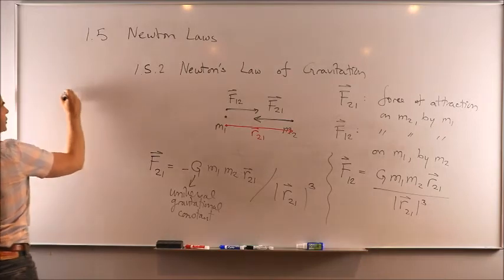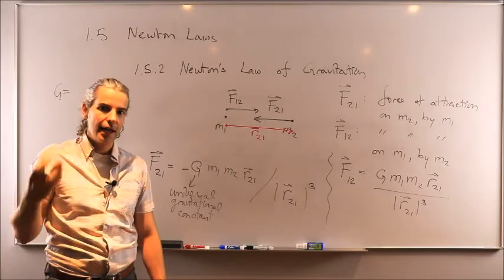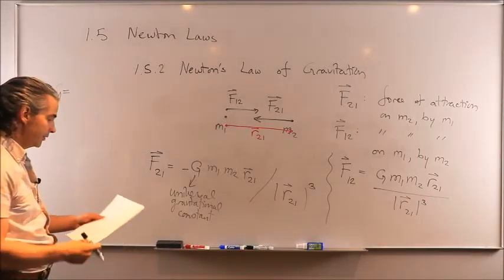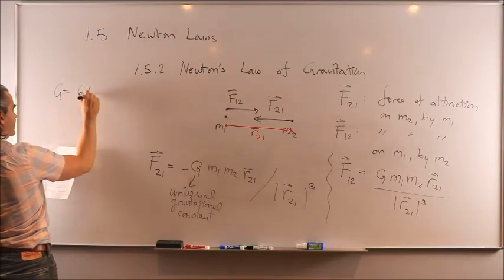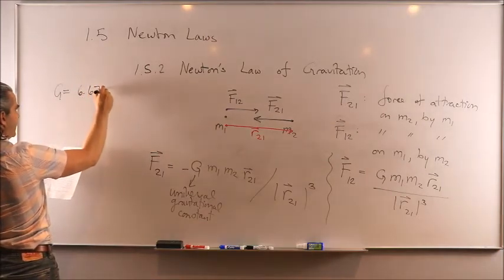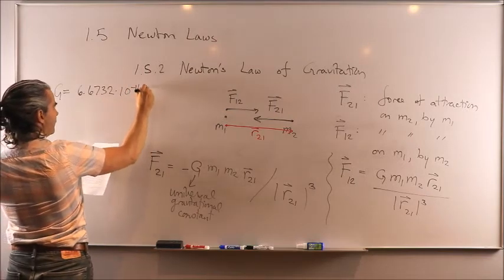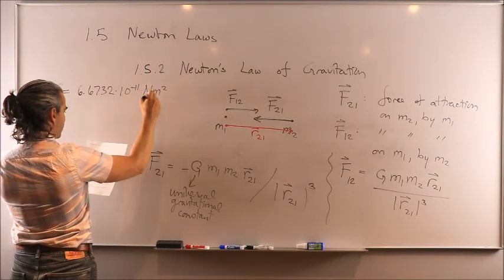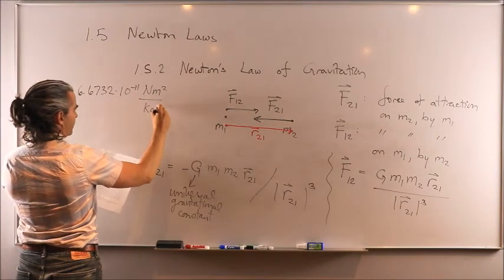By the way, this gravitational constant, you don't have to remember that on top of your head in an exam. I'm going to provide all constants for you. But for completeness, this constant is given by 6.6732 times 10 to the negative 11 Newton meter squared over kilogram squared.